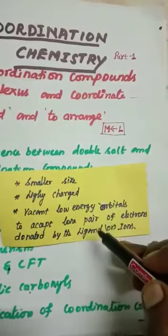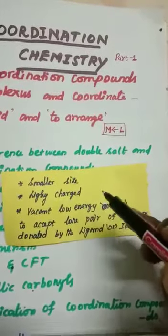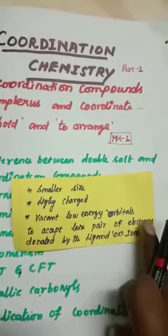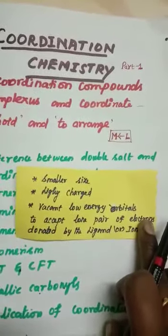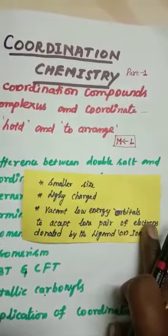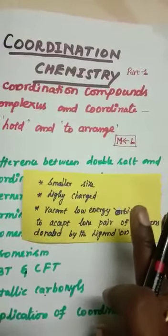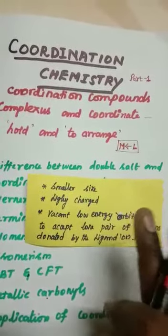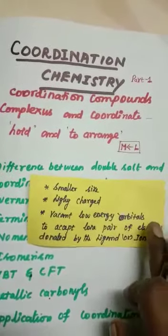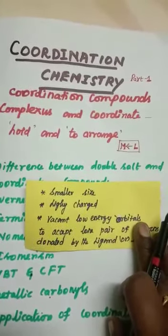Because of these three reasons, D-block elements have the tendency to form complexes. Some non-metals can also form complexes, but the tendency to form complexes of non-metals is less than D-block elements.